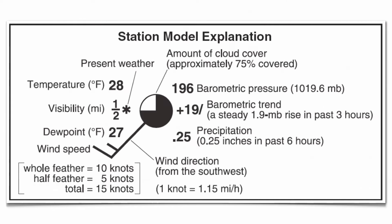Wind speed is also going to be associated with wind direction. Winds are named from the direction in which they come from. So this is going to be a southwest wind — winds are named from the direction in which they originate, coming from the southwest.